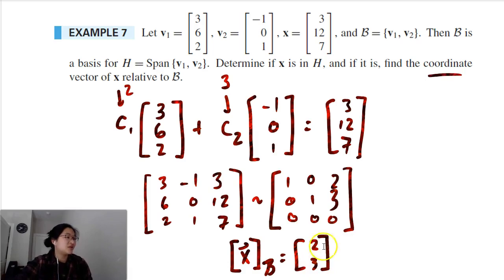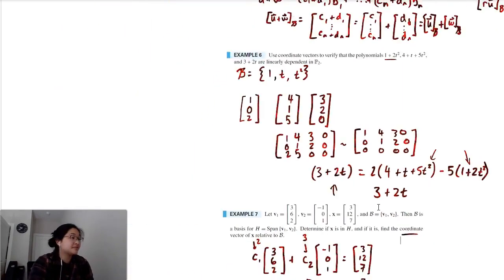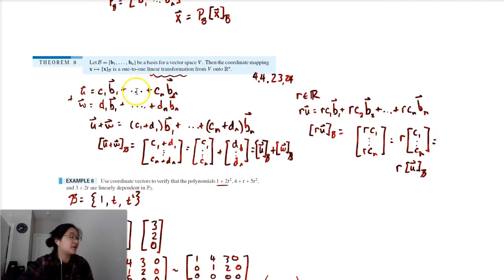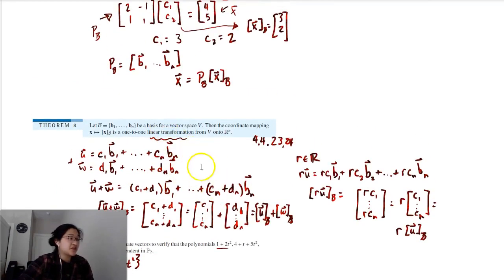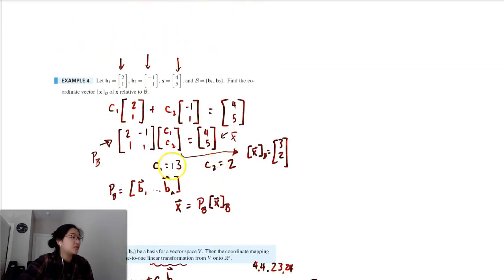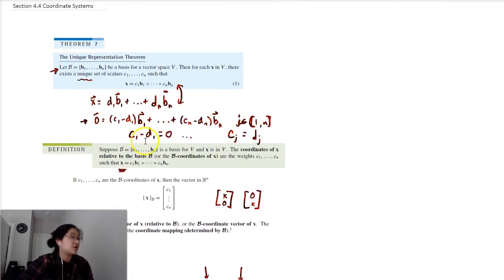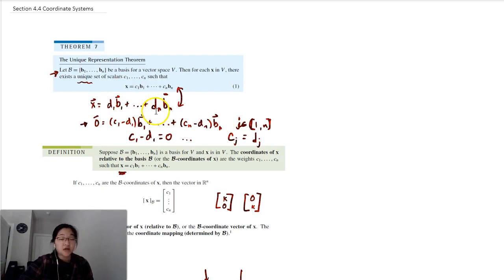To summarize, we covered: polynomials and their bases; the coordinate mapping with a basis being a one-to-one linear transformation; the change of coordinates matrix using our basis; and given a coordinate vector we can find the actual vector. We also established that given a basis there is a unique set of scalars that gets us to any vector x.